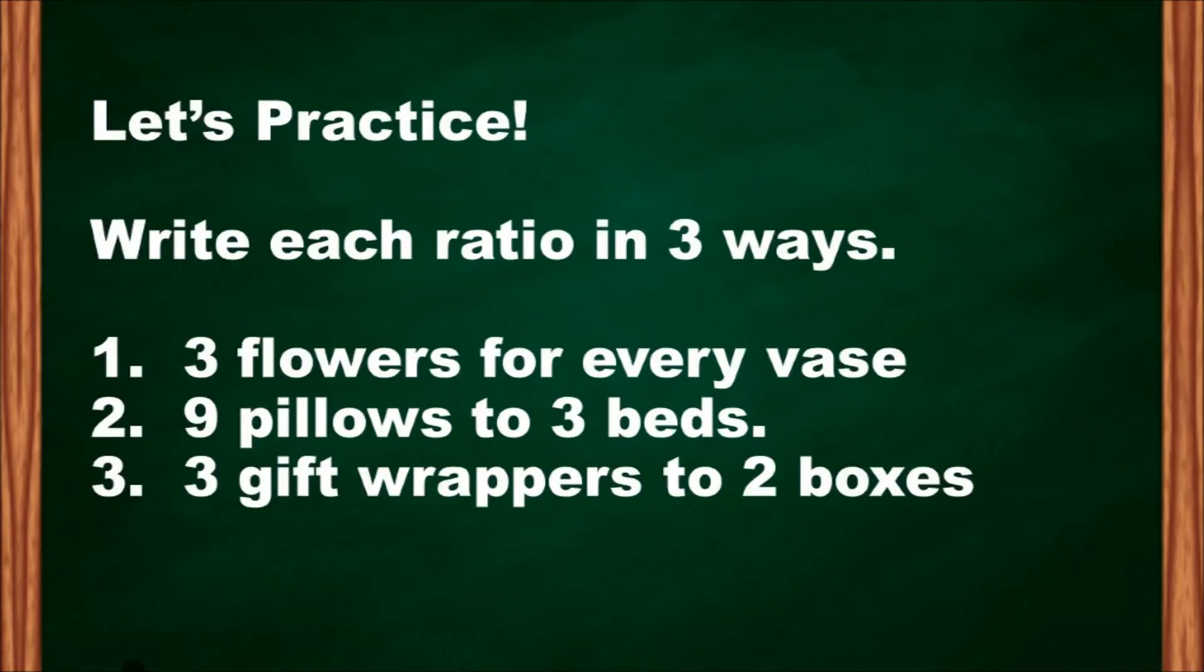Let's practice this one. Try to write each ratio in three ways. Number one: three flowers for every vase. Nine pillows to three beds. Three gift wrappers to two boxes. You have 30 seconds to do this.